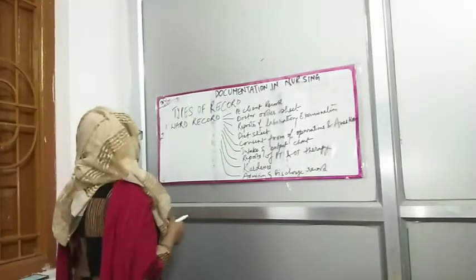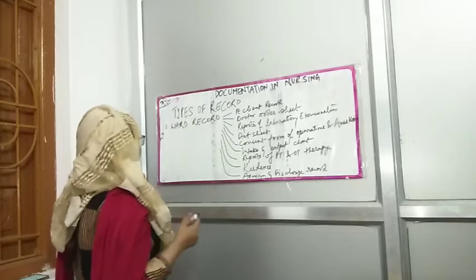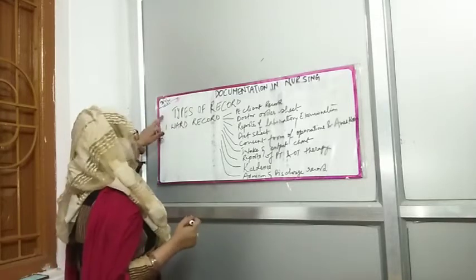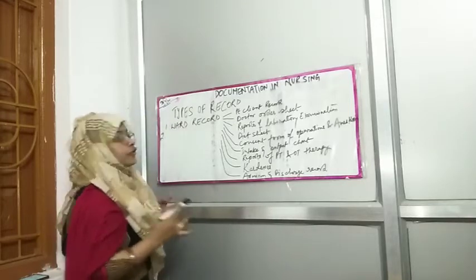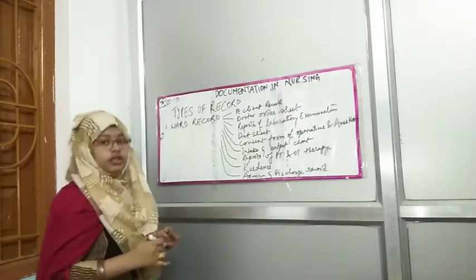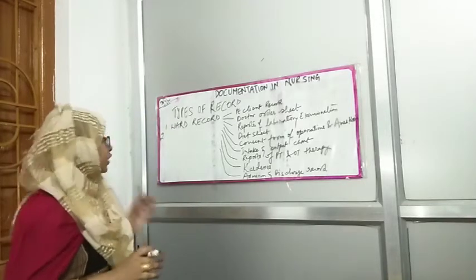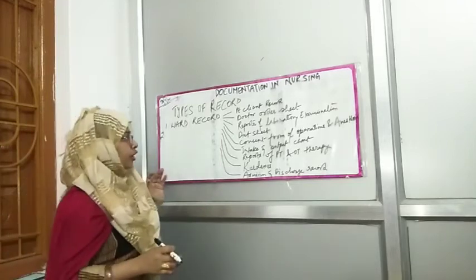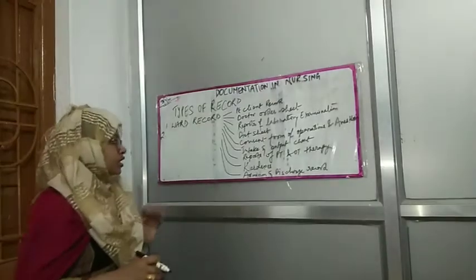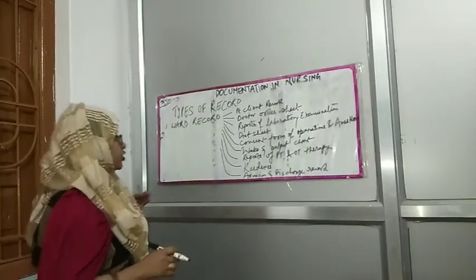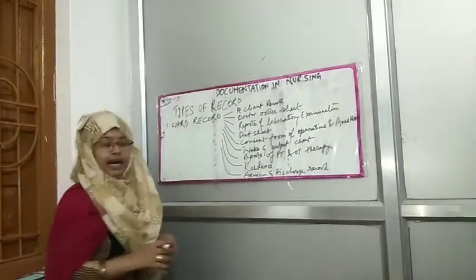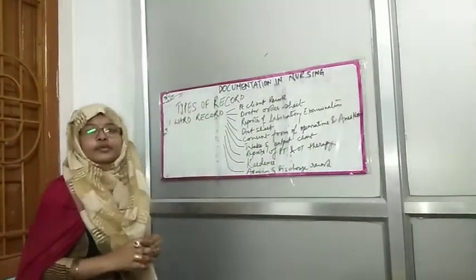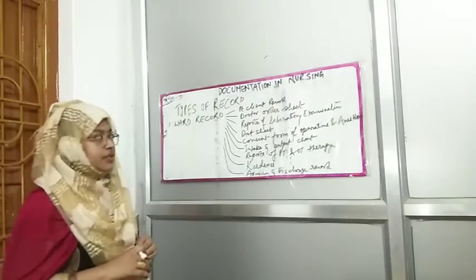Now we are going to read about types of records. There are basically four types of records: ward records, nurse records, education records, and administrative records.